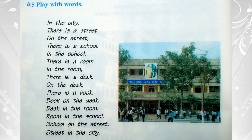Five: Play with words. In the city there is a street. On the street there is a school. In the school there is a room. In the room there is a desk. On the desk there is a book. Book on the desk, desk in the room, room in the school, school on the street, street in the city.